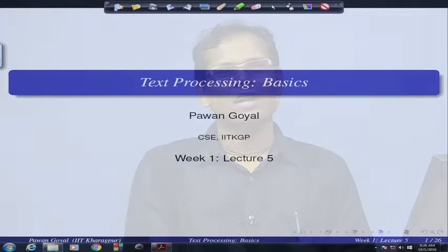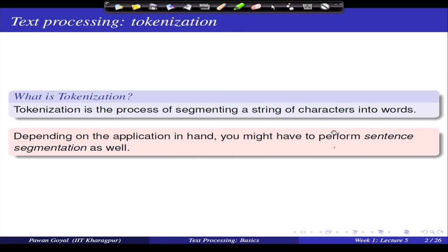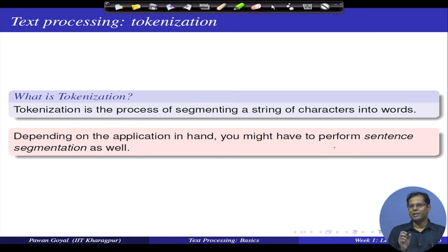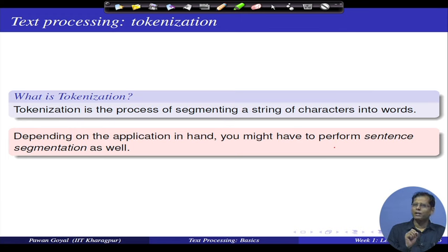Today in this lecture we will start with basic preprocessing in language — the basic concepts and challenges one might face while doing text processing. We will start with the problem of tokenization. A token is an individual word in the corpus. When preprocessing text, we face a string of characters, and tokenization is the process of converting this string of characters into a sequence of words.